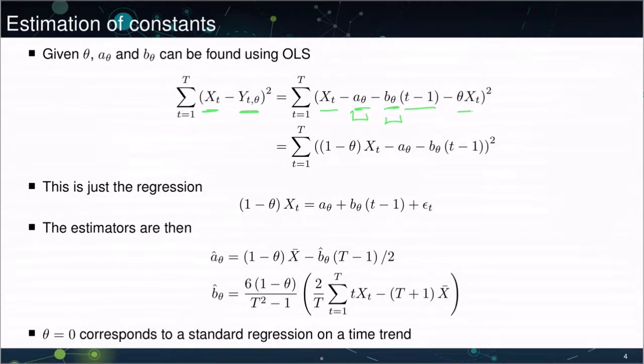So we see the problem is simply Xt minus alpha theta minus beta theta times the time trend. These are the two parameters that we care about, and then we have minus theta Xt all squared. That turns out to be equivalent to fitting an OLS of 1 minus theta times Xt on alpha theta and beta theta.